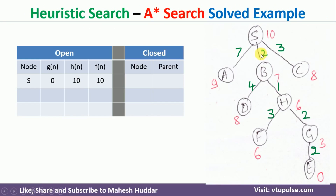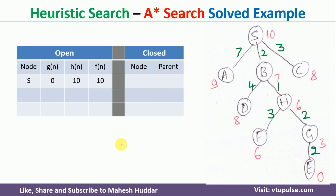In this case, S is the source node and E is the goal node. The value written in red color is the heuristic value, and the value written in green color is the actual cost. In a heuristic search algorithm, we usually calculate the F value, where F(n) is equivalent to g(n) plus h(n).